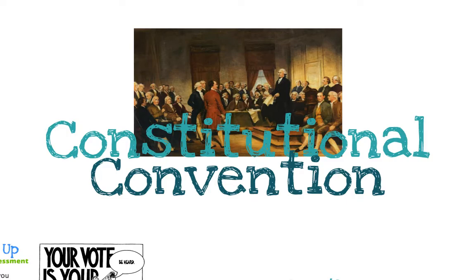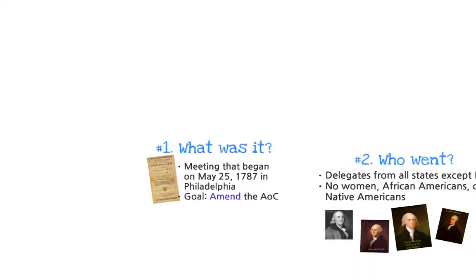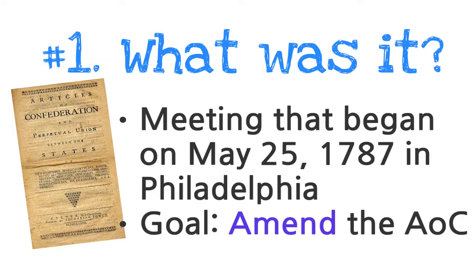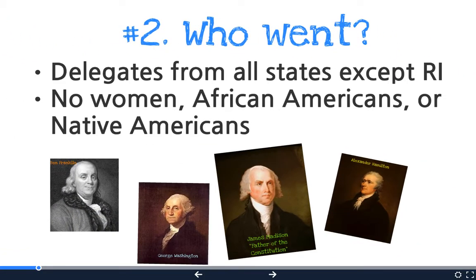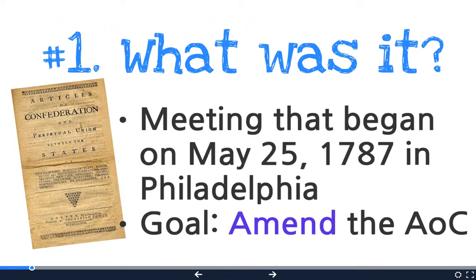So we have to now introduce the Constitutional Convention. First and foremost, this was a meeting that began May 25th, 1787, and they were in Philadelphia. They picked Philadelphia, Pennsylvania because it was in the middle between the Northern and the Southern colonies and it was where a large number of Founding Fathers could get to easily. Their number one goal was to amend the Articles of Confederation — amend means to change — so their original intention was to change the Articles of Confederation.